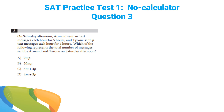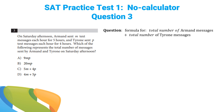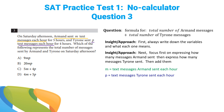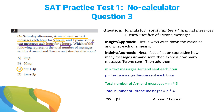The SAT loves model questions — a model question is just a math equation that describes something in real life. In this case, the total number of messages Armand sent plus the total number of messages Tyrone sent. On model questions, the first thing you do is always ignore all the words and write down the variables and what they mean. M is messages per hour for Armand, P is messages per hour for Tyrone. Armand texted for 5 hours, Tyrone for 4 hours, so the total is 5M plus 4P — answer choice C.